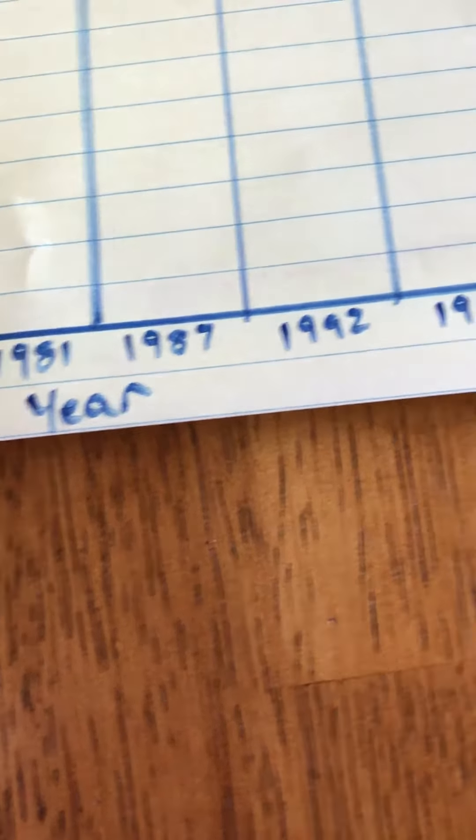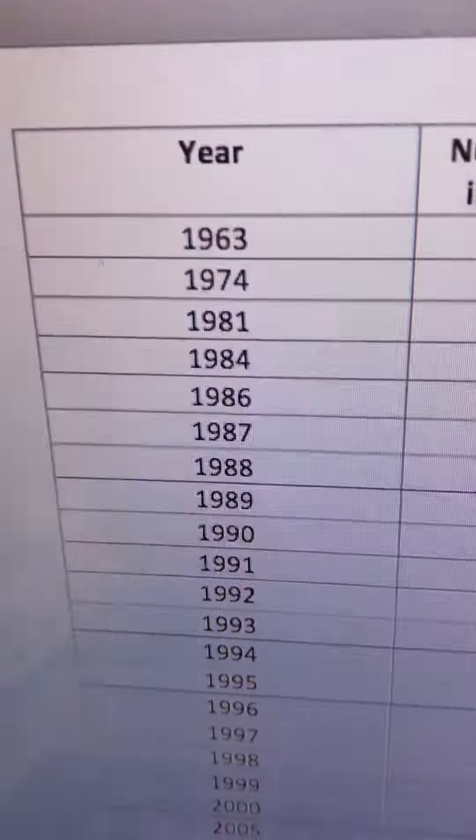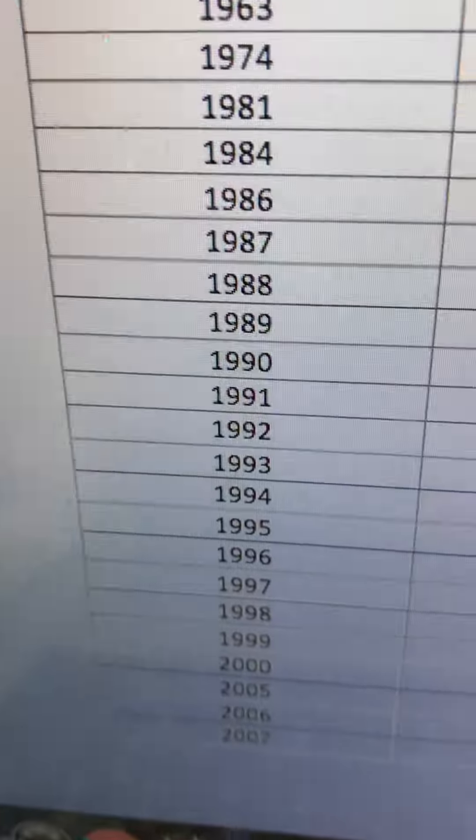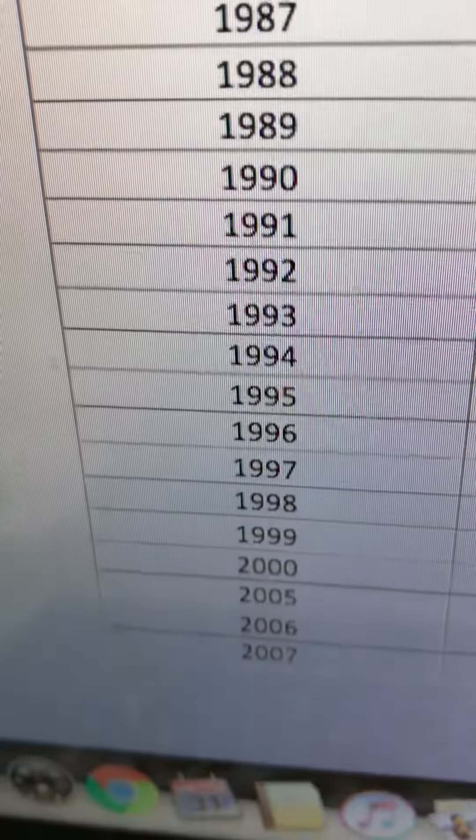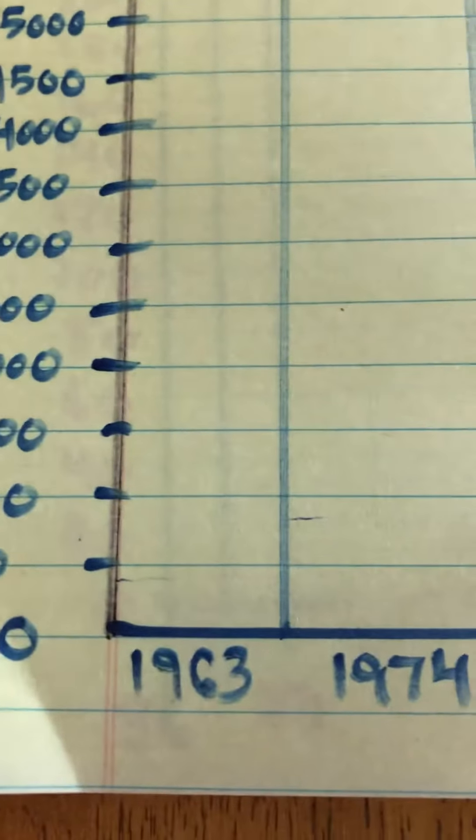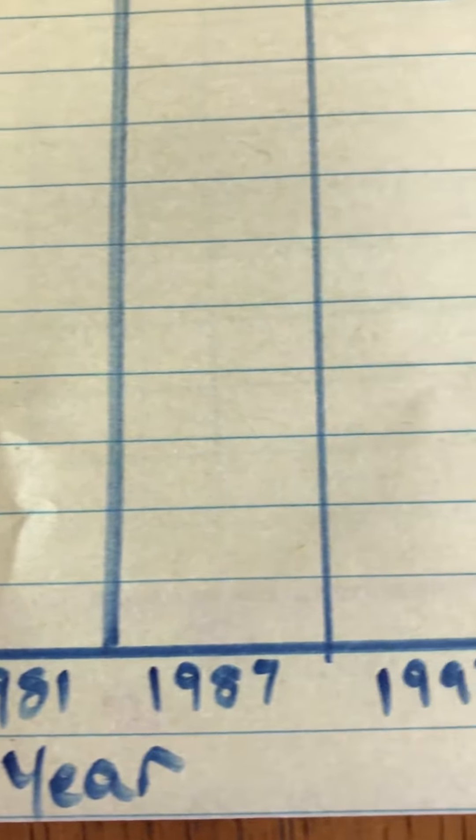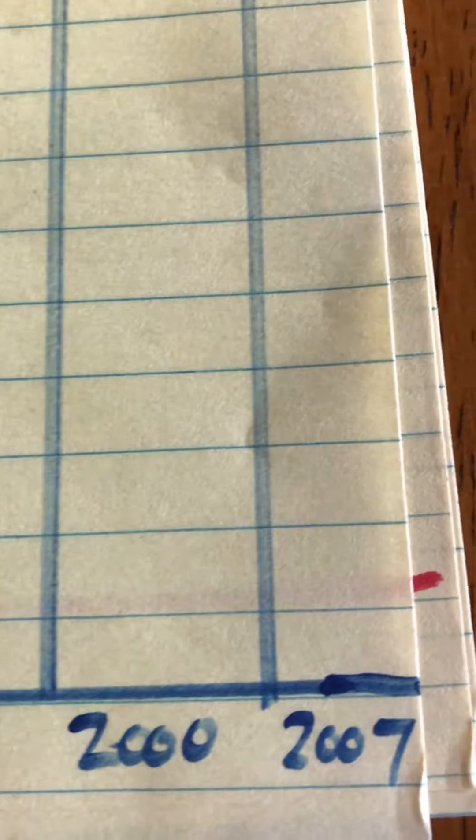On this side we're going to have number of nesting pairs and down on the bottom side we're going to have the year. Now because these years were not consecutive we skipped some years. I just picked out eight years spanning from 1963 to 2007. So these are the years that I chose. You can do the same thing if you'd like to or maybe if you're a little more ambitious you want to graph all of these years you can sure do that. You would just need to use a couple pieces of paper probably to go all the way across if you want to do that.